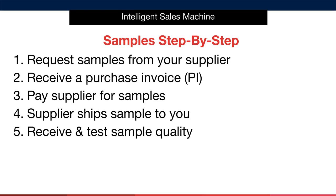Here's the process step by step. First, you're going to request samples from your supplier. You'll then receive a purchase invoice, or PI, from the supplier. Once you receive this, you'll arrange to pay the supplier for the samples you've agreed to. The supplier will then ship the samples to you via the agreed method — that is their courier or yours. Finally, after a few days of travel, you'll receive the samples and will proceed with testing the sample quality. You may be wondering how do I pay for the samples — don't worry, because I've got you covered.